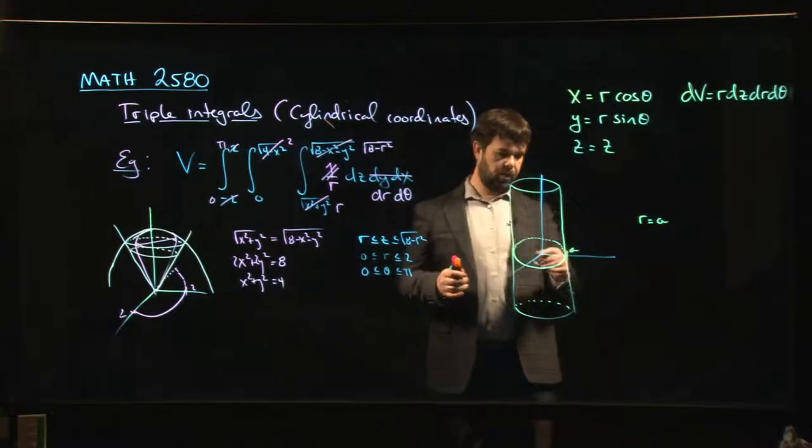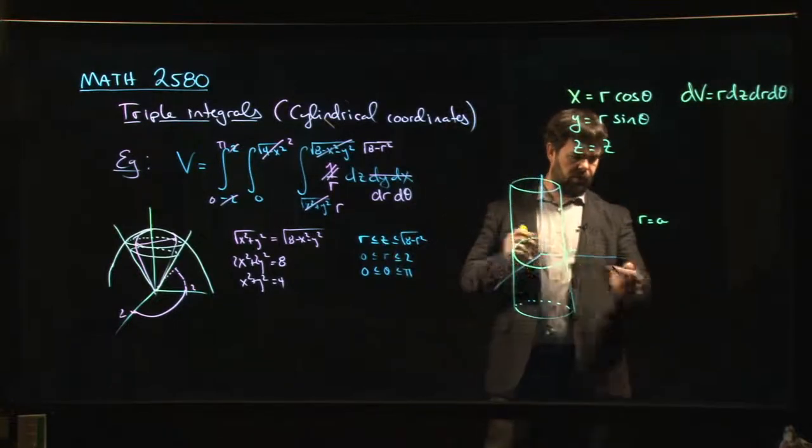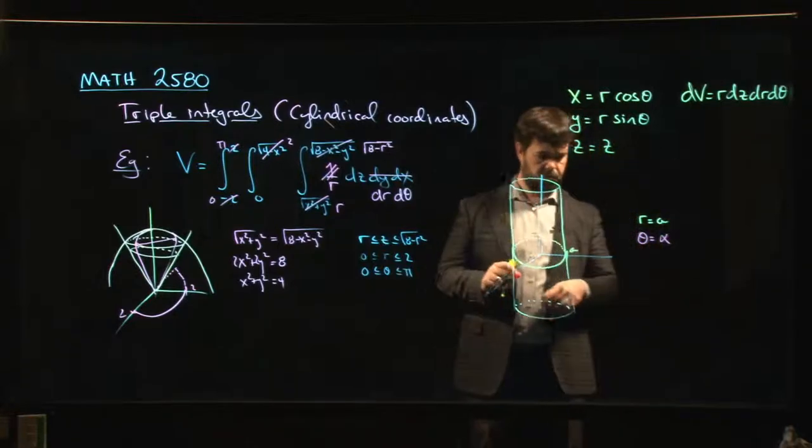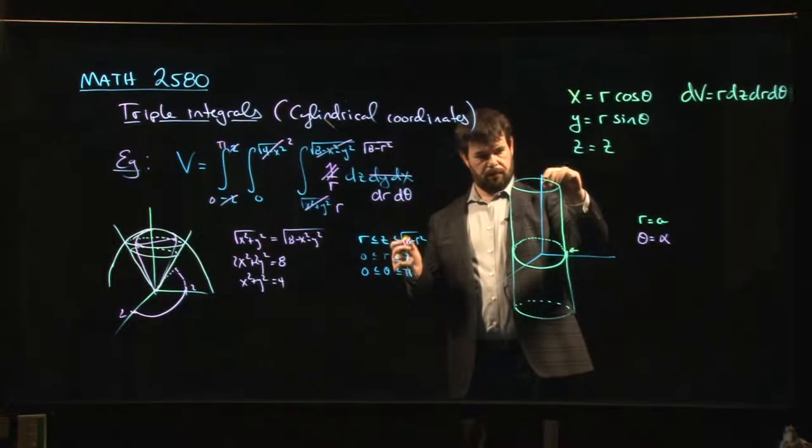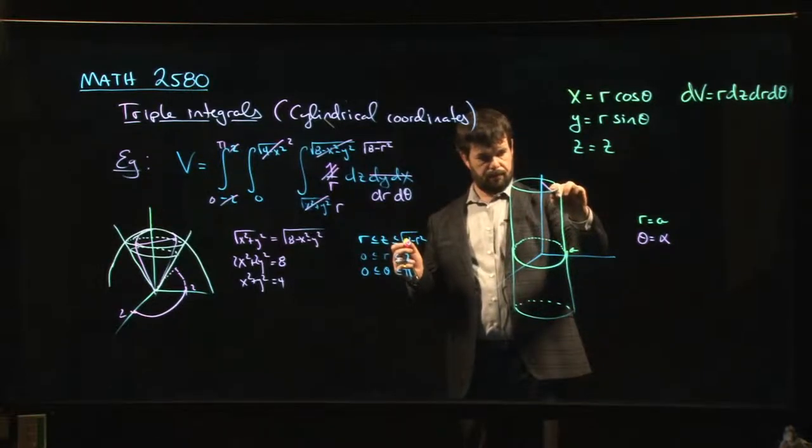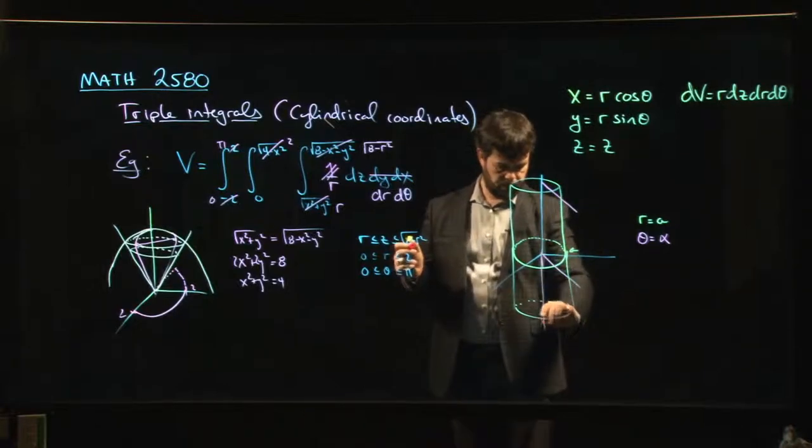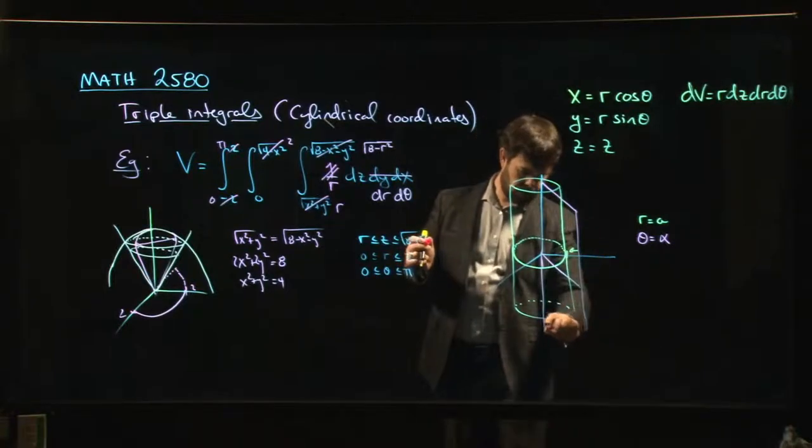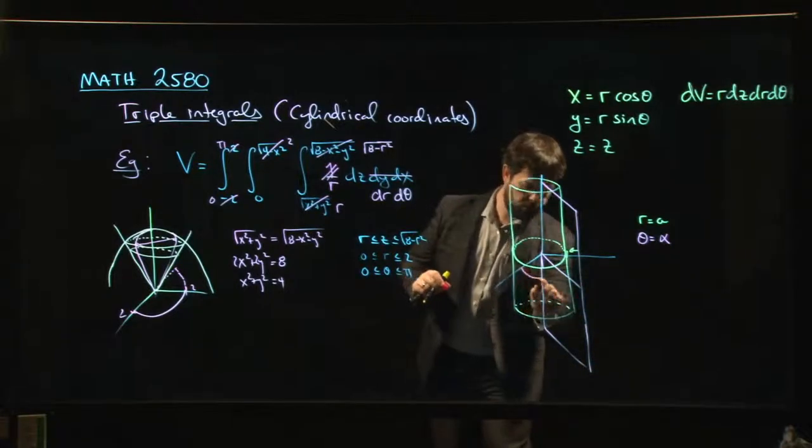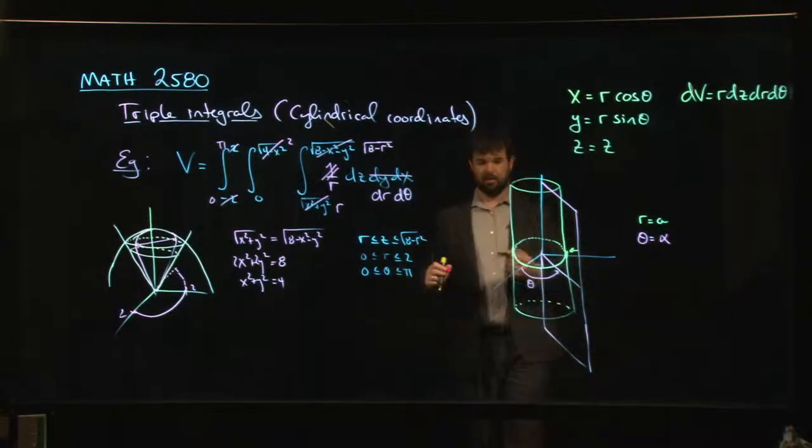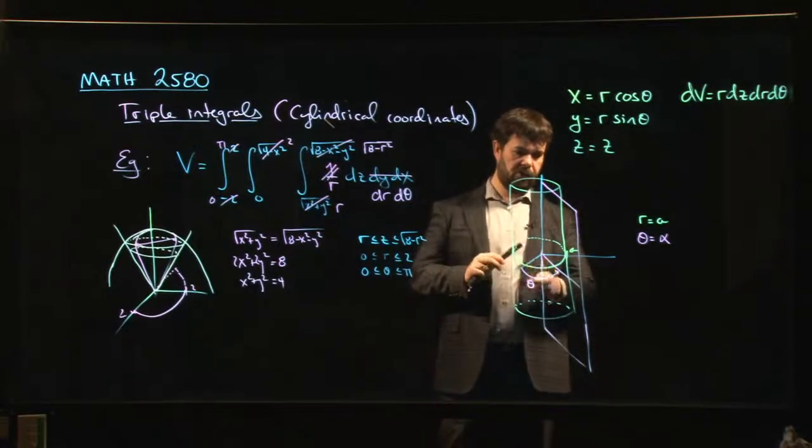Well, the next thing you might do is you might specify a value for theta. So we say theta is equal to, I don't know, alpha, or theta naught, however you want to do it. What does that look like? Well, that means now that you're basically taking a sort of half plane coming down like so. So you have this sort of half plane like this where theta is the angle that's measured from the positive x-axis as usual. Well, that half plane, you'll notice that it intersects...